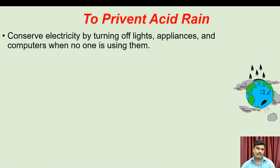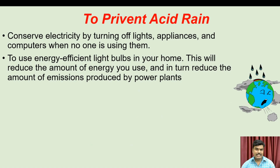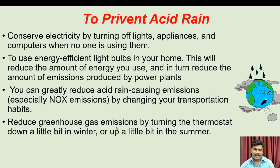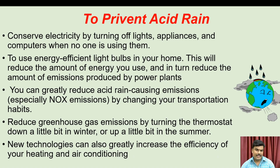To prevent acid rain: conserve electricity by turning off lights, appliances, and computers when no one is using them. Use energy-efficient light bulbs in your home to reduce the amount of energy you use, and in turn reduce the amount of emissions produced by power plants. You can greatly reduce acid rain-causing emissions and nitrogen oxide emissions by changing your transportation habits. Reduce greenhouse gas emissions by turning the thermostat down a little in winter or up a little in summer. New technologies can also greatly increase the efficiency of your heating and air conditioning.